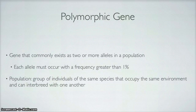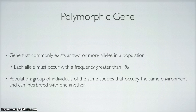A polymorphic gene is a gene that commonly exists as two or more alleles in a population. Each allele must occur with a frequency greater than 1% in order for it to be considered a polymorphic gene.